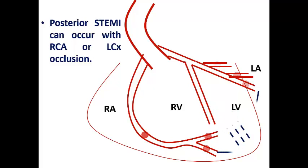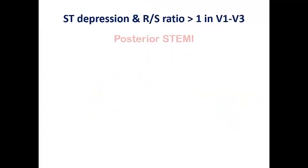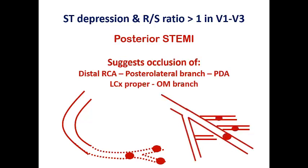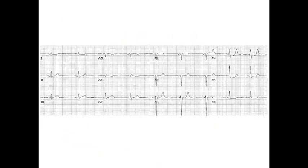When a patient has ECG features suggestive of isolated posterior STEMI without any other extension, the first possibility is the RCA territory with occlusion at the distal RCA, posterolateral branch, or PDA, since RCA is dominant in 70% and co-dominant in 20% of cases. There is also a possibility of dominant LCX territory — occlusion of the LCX proper or one of its OM branches. All these possibilities can be the culprit in isolated posterior STEMI.